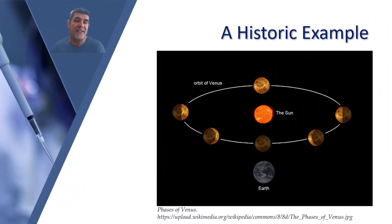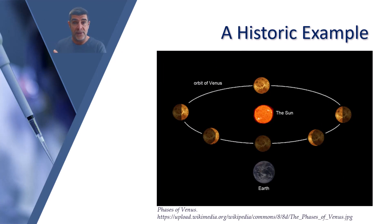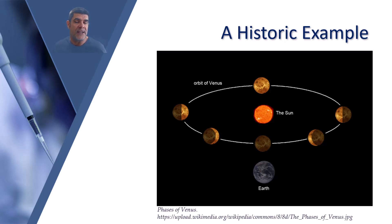One of the ways of understanding empiricism is to look at an important historic example. What's really interesting about the work of Galileo is that he represents a nice juxtaposition of both empiricism — using observation and evidence through experimentation — as well as important thought experiments where he didn't yet have the evidence to support his ideas.